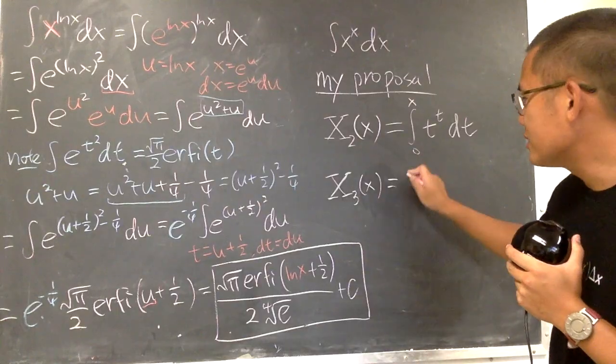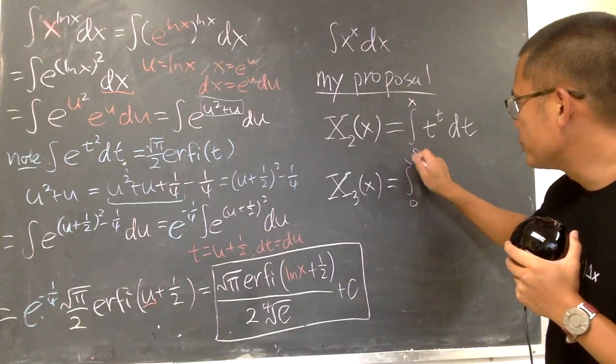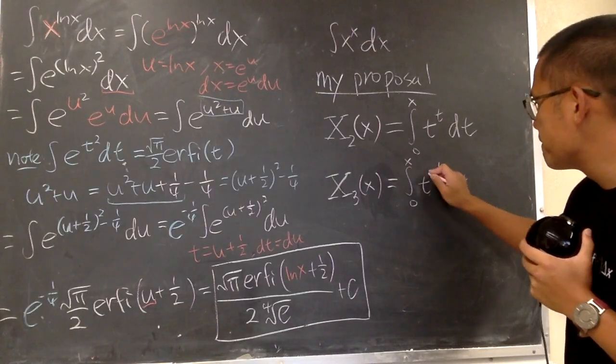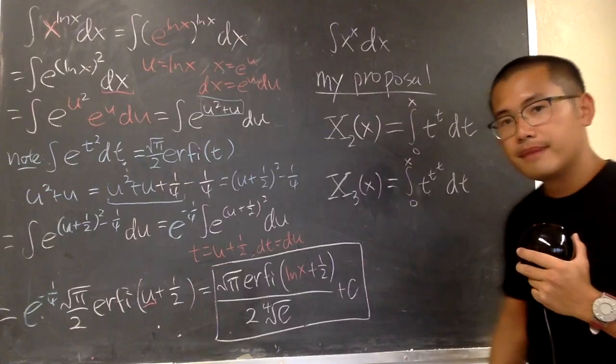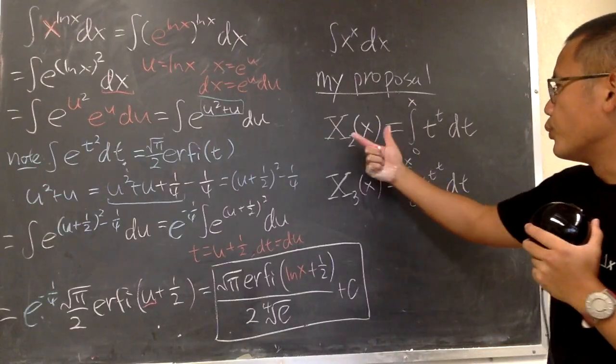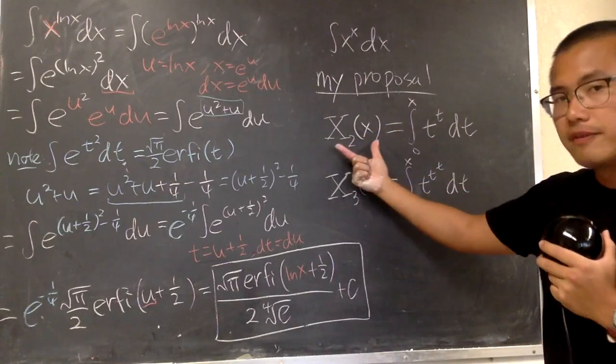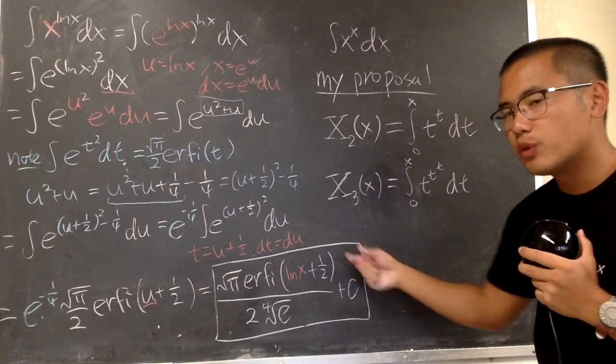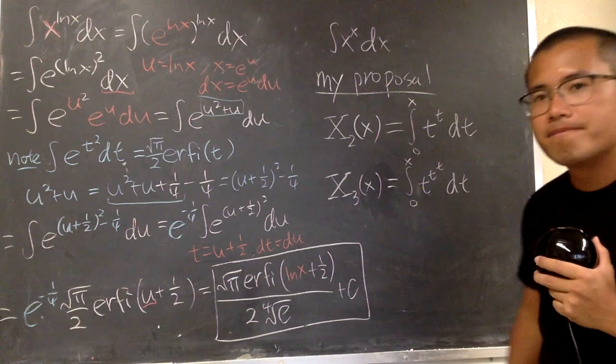x and then the little 3 of x. You guessed it. Yes. Integral going from 0 to x, and we do t to the t to the t dt. How crazy is that? The idea is that if we differentiate this function, we'll just get x to the x power. If we differentiate this function, we'll get x to the x to the x power. Very good.